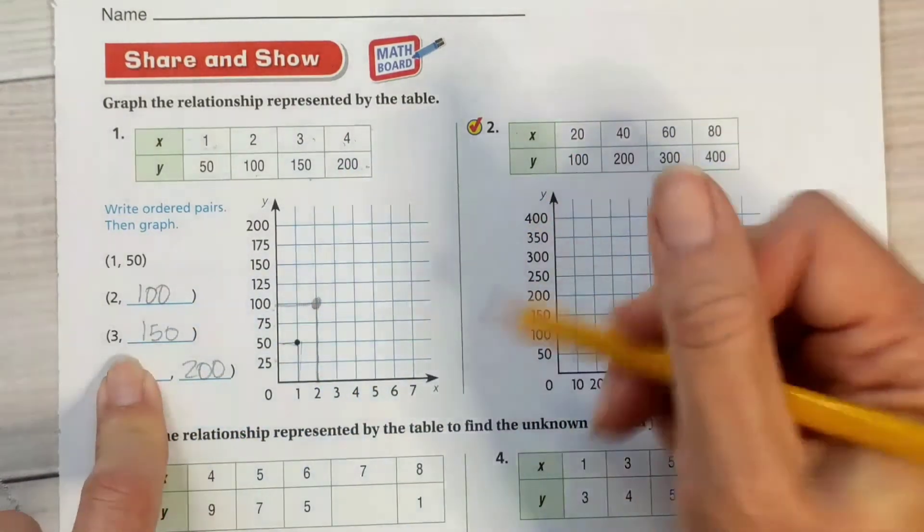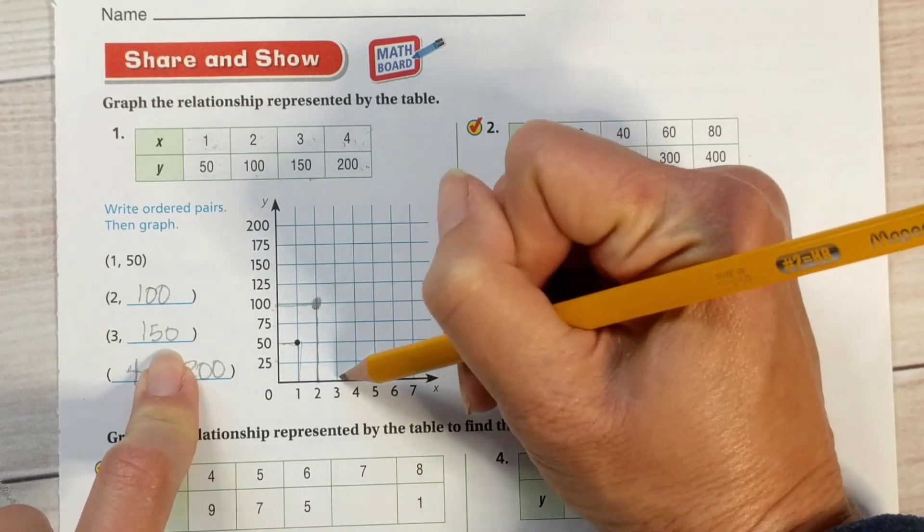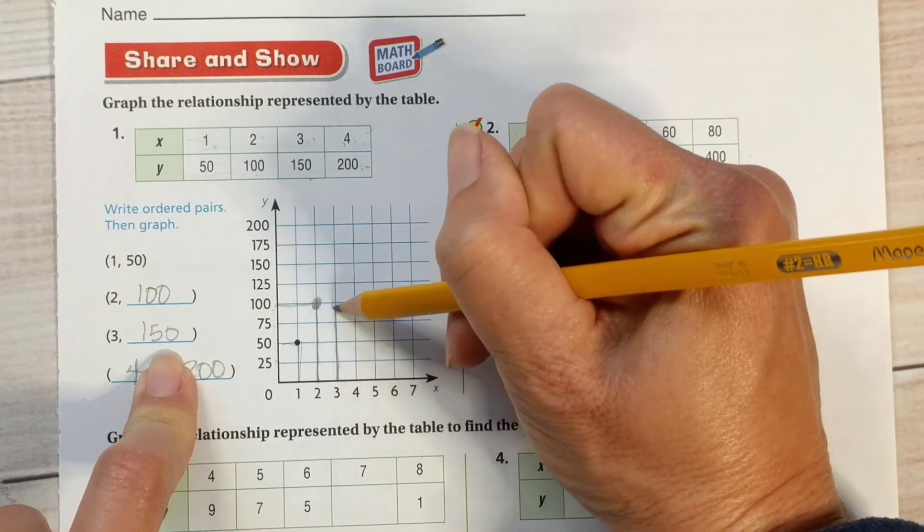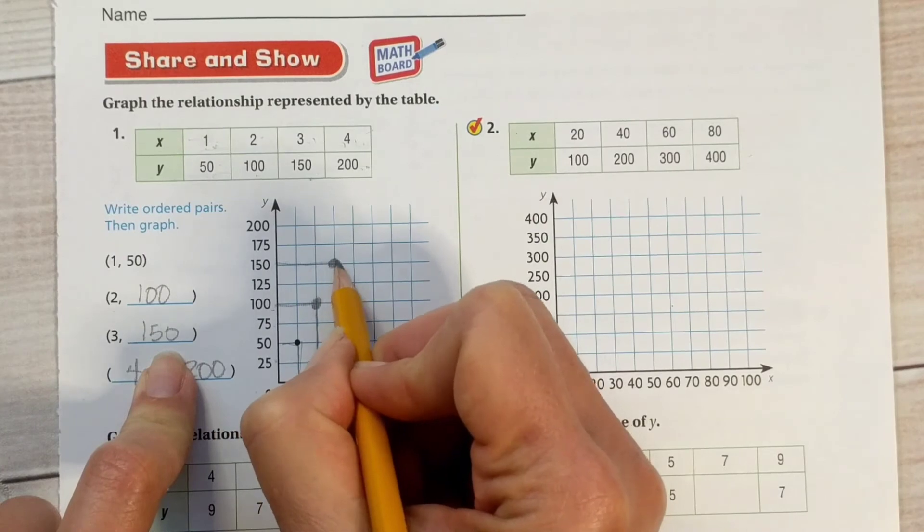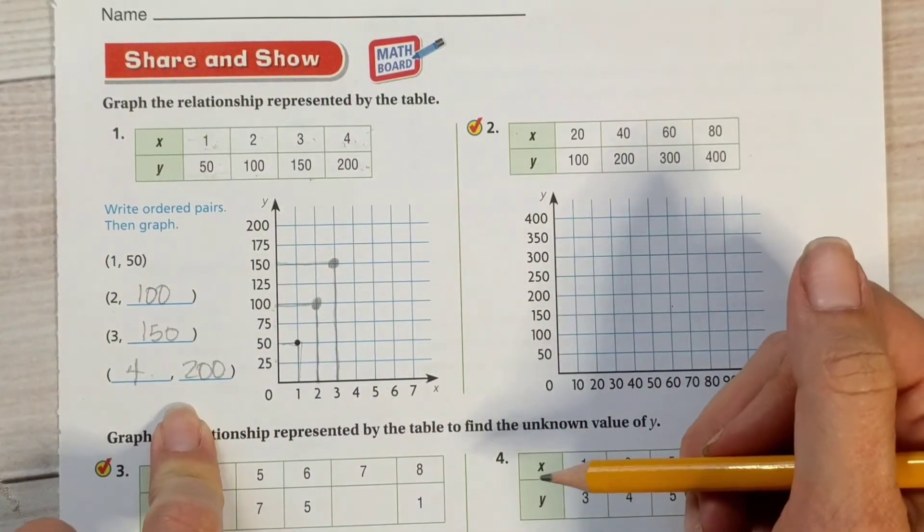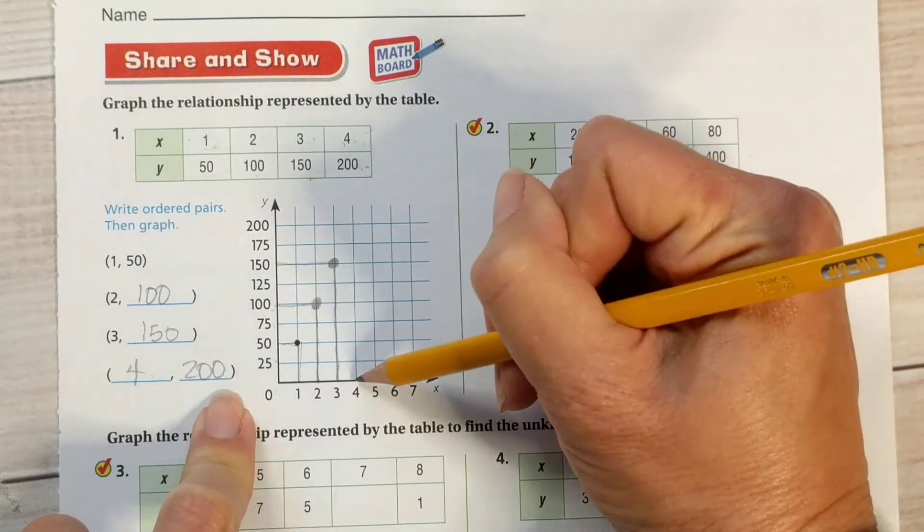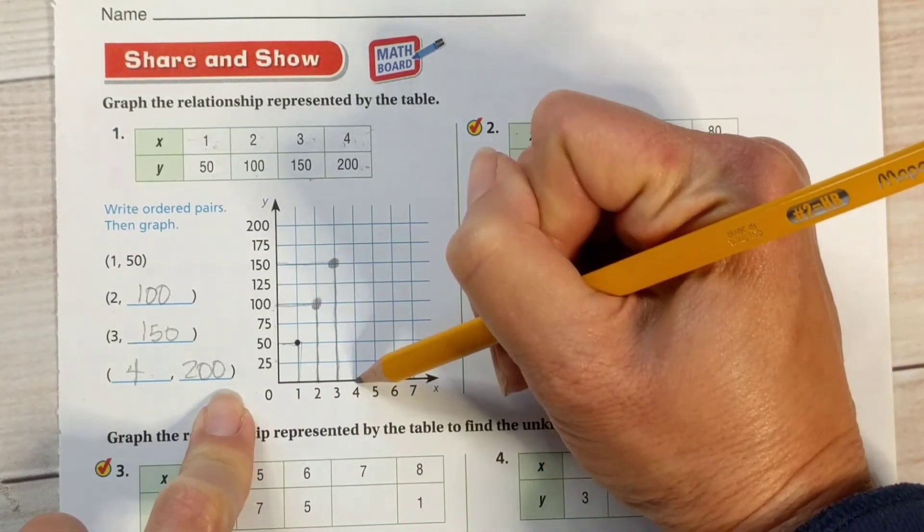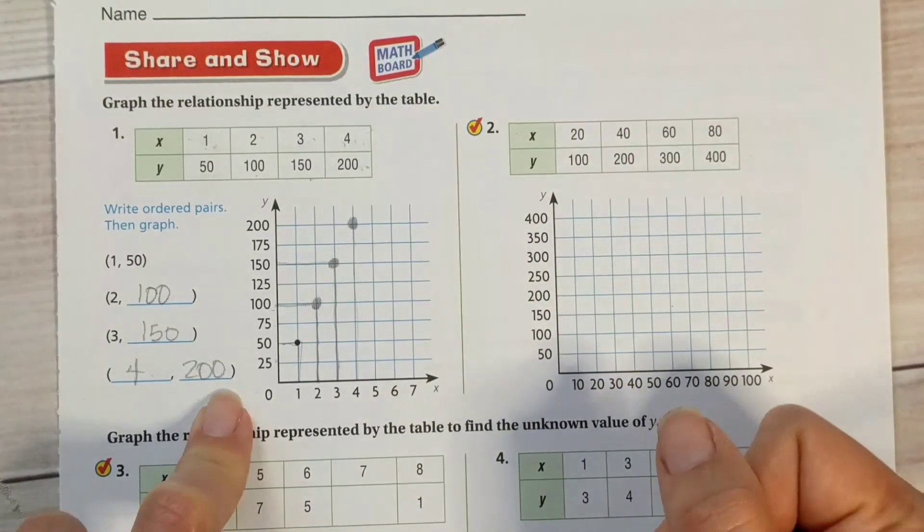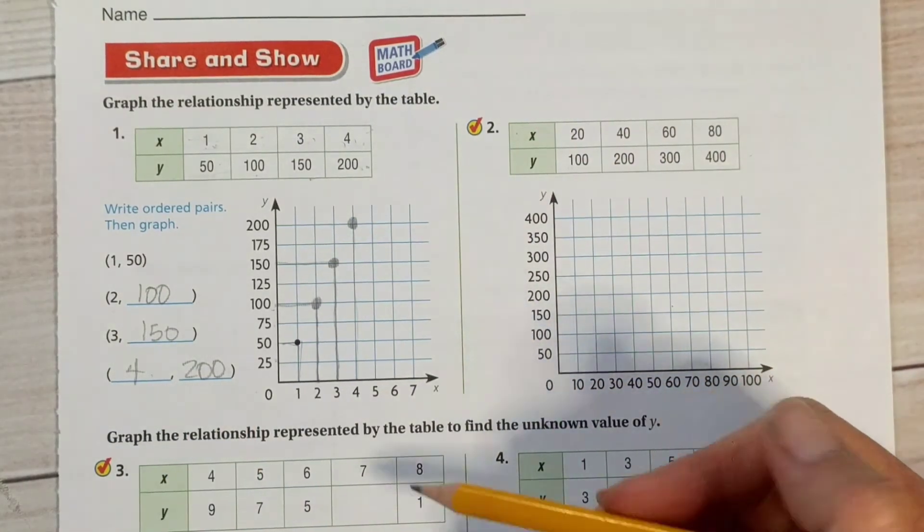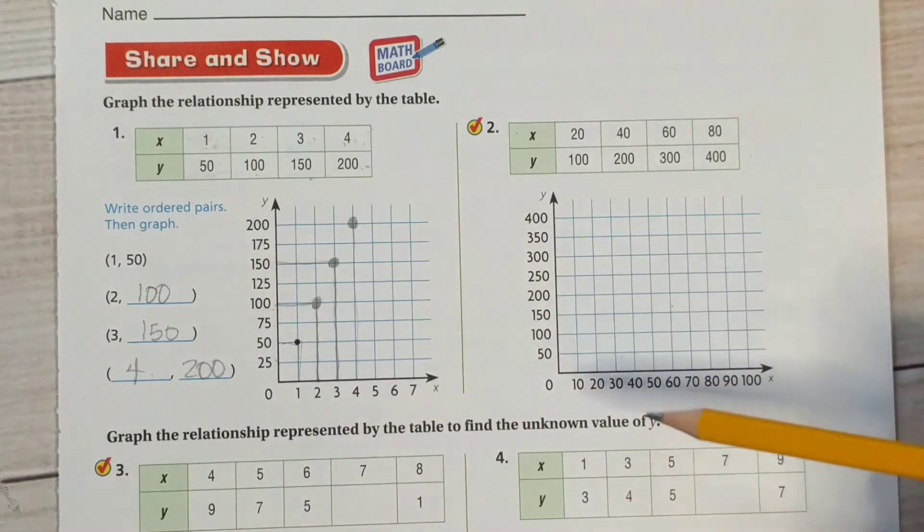Alright, at 3, when x equals 3, y equals 150. So we're going to go all the way up here to 150, that's where they meet. Good. And our final ordered pair is 4, 200. So we're going to start at 4, go all the way up to 200. Alright, and we have graphed the four ordered pairs from the table. Now you can keep going on your own. Alright, now for our notes.